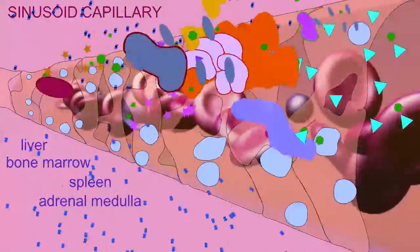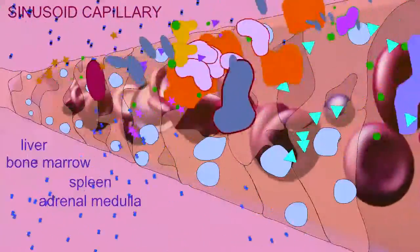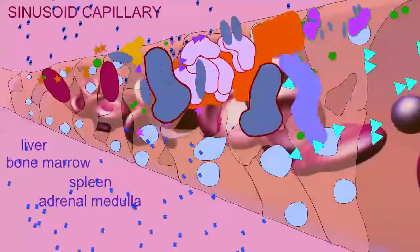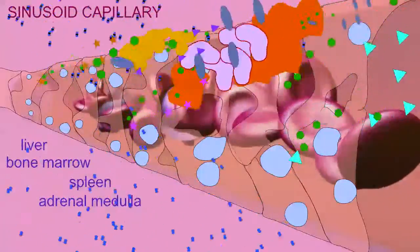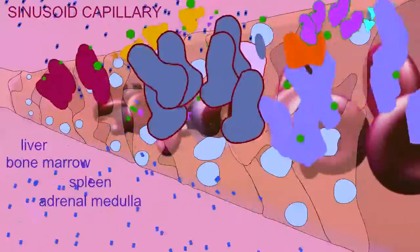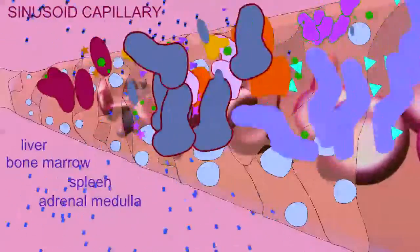These sinusoid capillaries allow additional transport of materials, such as in the liver, especially where cells are entering or leaving the blood, such as in the bone marrow, or the destruction of old red blood cells in the liver and spleen.